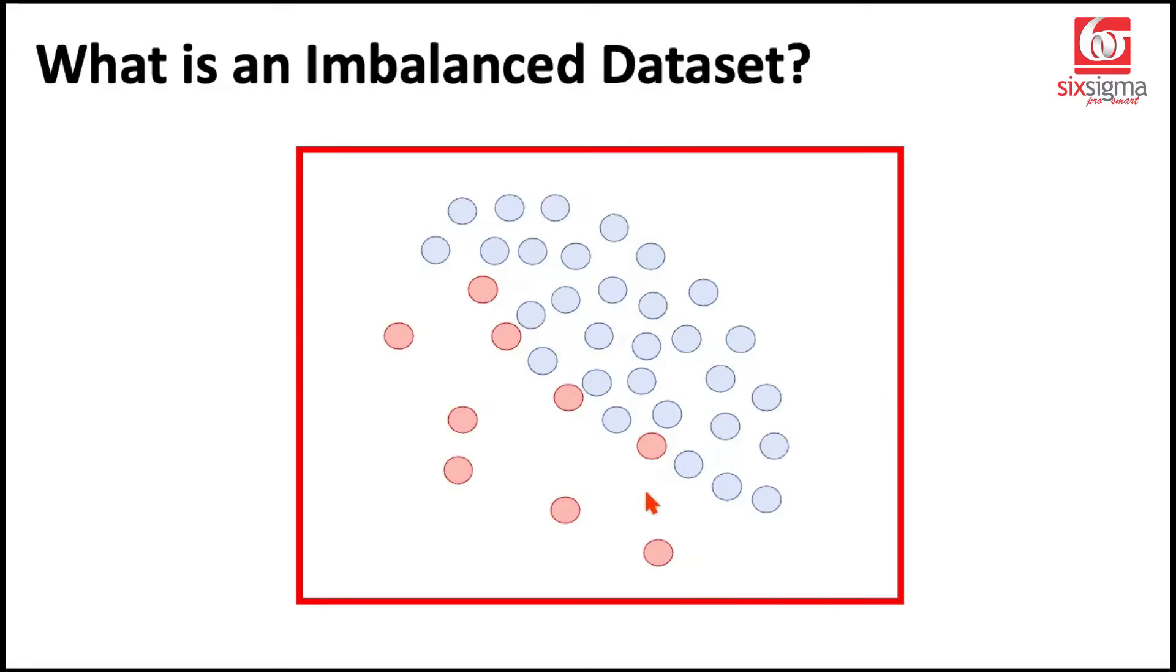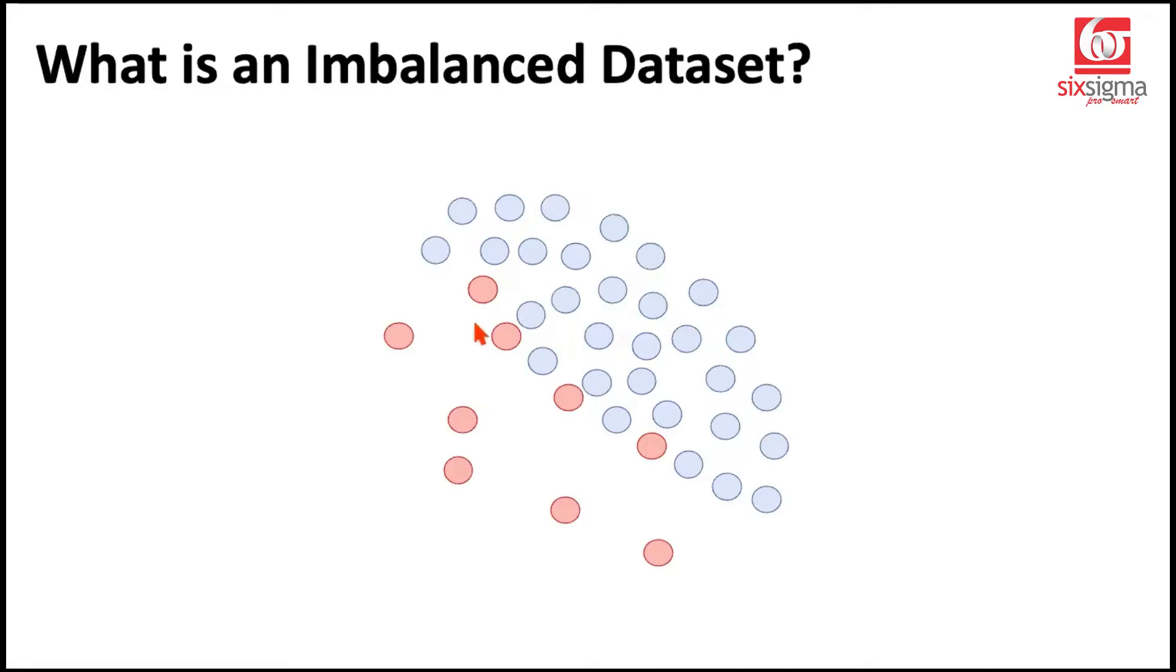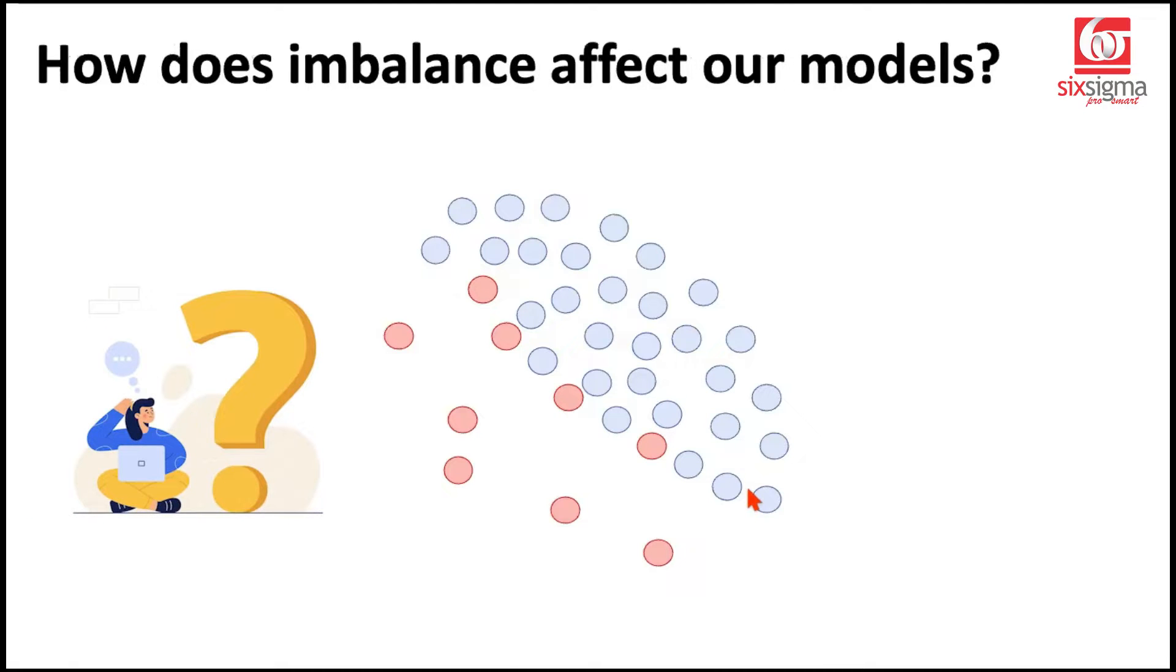But what if the data was like this? So now what happens is that you have relatively lesser instances of reds compared to the blues. And why is that a problem?